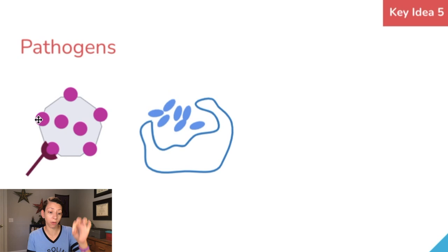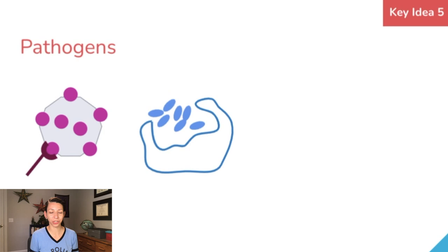We might have macrophages or white blood cells that engulf our foreign invaders. We also have other white blood cells that remain as memory cells in our body, so we can fight off other invaders the next time we're introduced to that same pathogen.